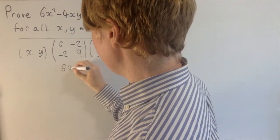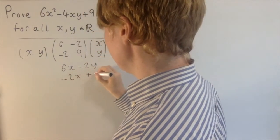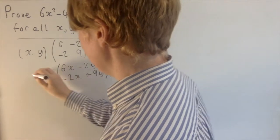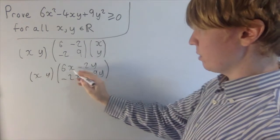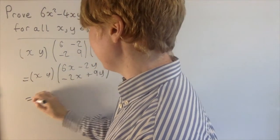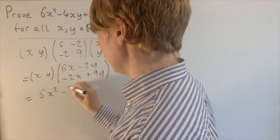So we've got 6x minus 2y and here we've got minus 2x plus 9y. This is our column vector and then we've got x, y here. Then we multiply this out and multiply all of these by x, all of these by y.